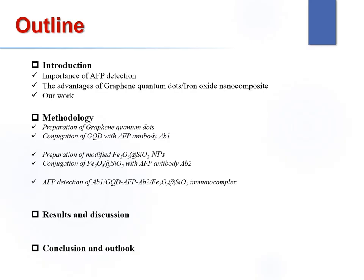This is the outline. First, I will introduce the basic information about my work: the importance of AFP detection, the advantages of graphene quantum dots and iron oxide nanocomposites, and our work. Moreover, I will introduce the methodology about the fabrication process, including the preparation of graphene quantum dots and the conjugation with AFP antibody AB1, the preparation of modified iron oxide silica nanoparticles, and the conjugation with AFP antibody AB2. Finally, I will perform the AFP detection using AB1-conjugated GQD and AB2-conjugated iron oxide silica immunoassay complex.